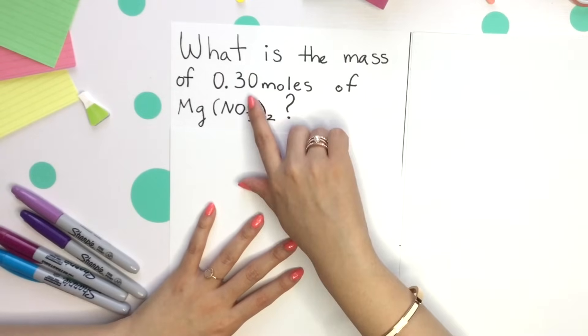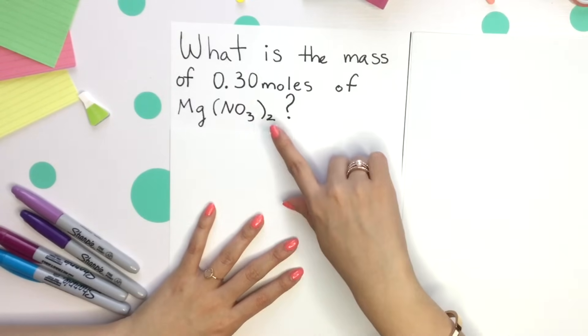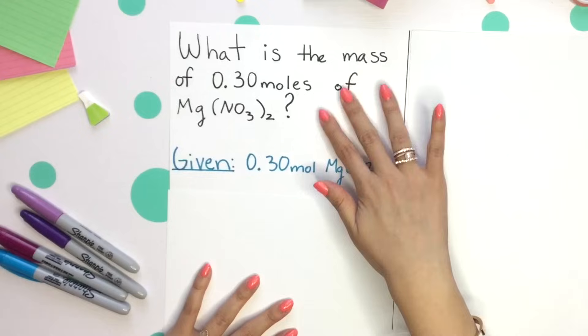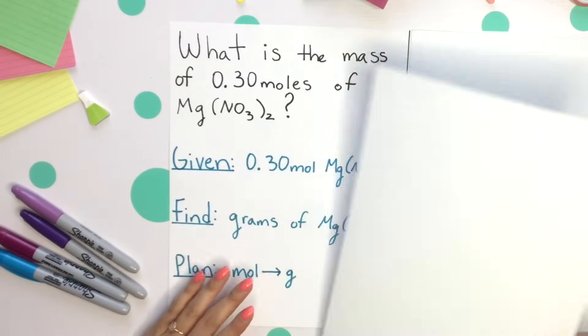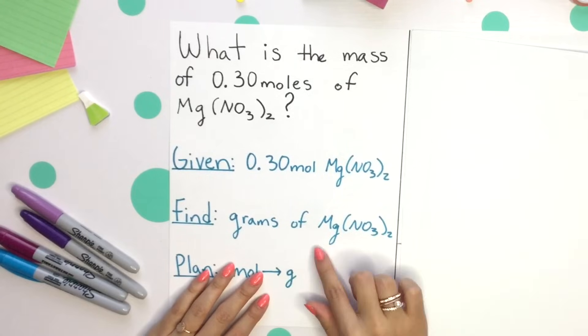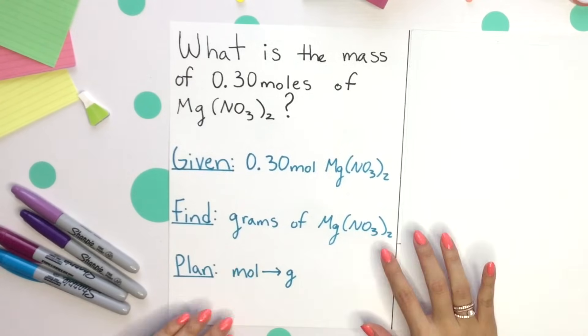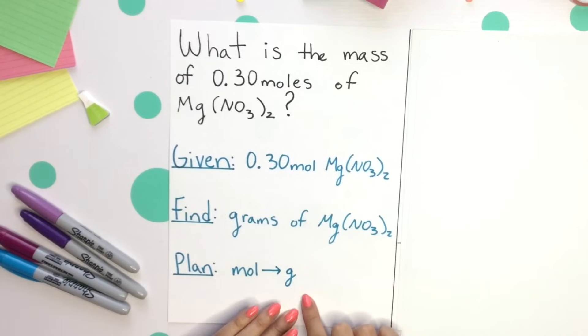Let's go in reverse, going from moles to grams. What is the mass of 0.30 moles of magnesium nitrate? Your given is that 0.30 moles magnesium nitrate. You are finding grams of magnesium nitrate, and our plan is going from moles to grams. Once again, we'll use our molar mass as our conversion factor.